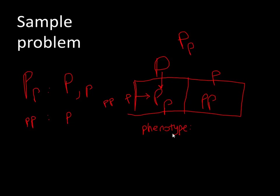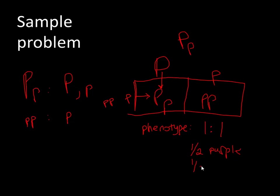Now for the phenotype ratio: you have two possible offspring. You'd expect one of the two to be purple — big P, little p — and one to be white — little p, little p. So the ratio is 1 purple to 1 white. That ratio simply means one of the two possibilities is purple and one is white. This is very simple here in the early going, but students sometimes get confused about what ratios mean, and we'll do more complicated ratios in the future.